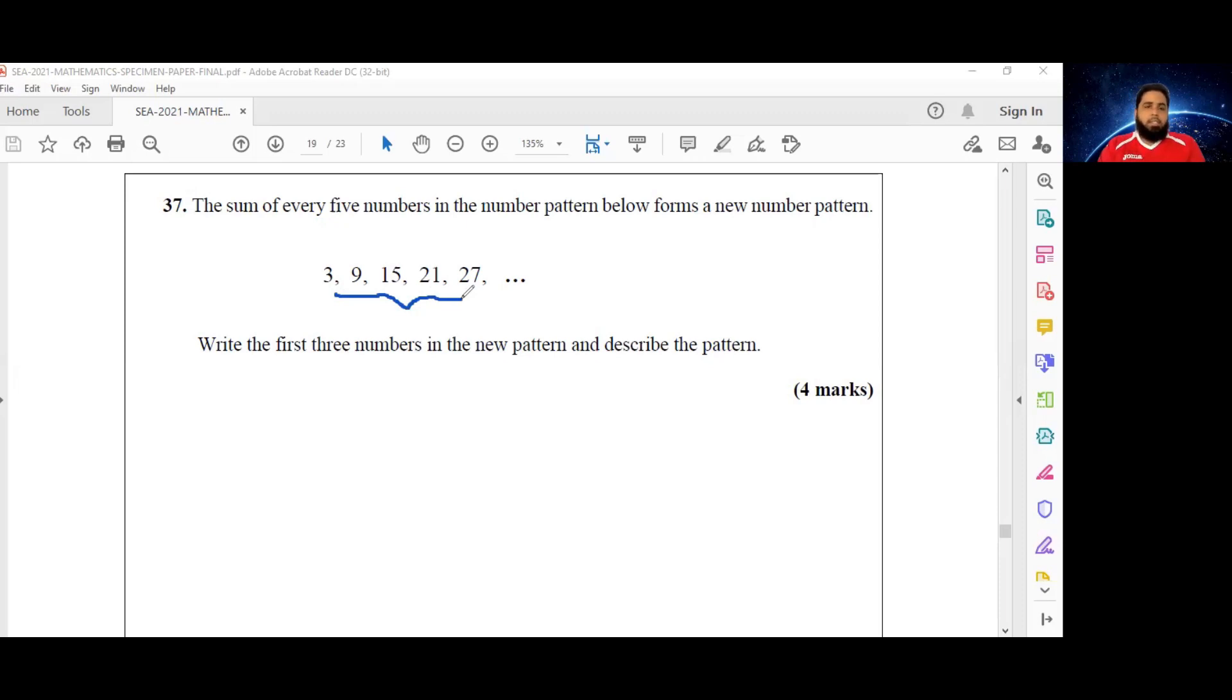So 3 goes to 9, which goes to 15, which goes to 21, which goes to 27. When we are trying to deduce the rule that is at play in a number pattern, never just look at the first two digits, because sometimes it may appear that it's just a simple addition.